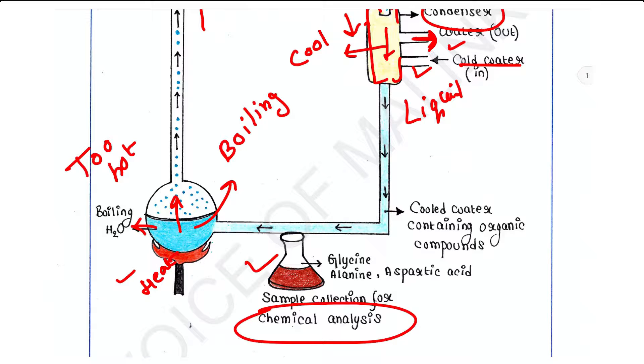And analyzed and found three amino acids such as glycine, alanine, and aspartic acid. And because of the condensation, water vapor transforms into water that mixes with this. So here again, water is coming due to the condensation. Water vapor converts into water and it is coming and it is mixing with this.